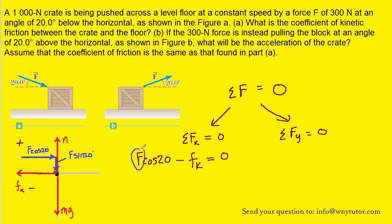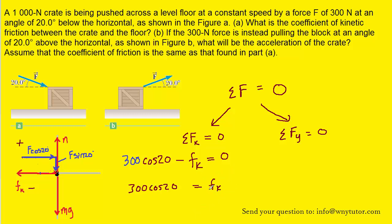Recall that F was stated in the question as being 300 newtons, so we can substitute that in. Then if we move the kinetic frictional force over to the other side, we see that Fk has a value of 300 cosine 20, which is approximately 282 newtons. That's a result we're going to hold on to.